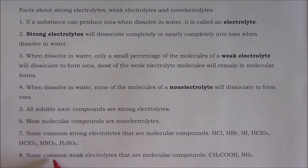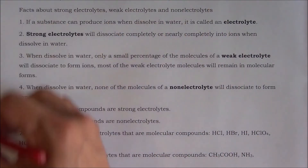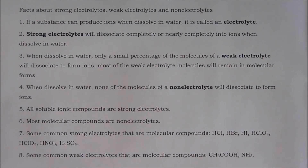Number eight — some common weak electrolytes that are molecular compounds: acetic acid and ammonia. Acetic acid is a weak acid; ammonia is a weak base. To answer some of the problems in chapter four, you have to remember all of these facts. If you don't remember all of them or some of them, you cannot solve all of the problems in chapter four.